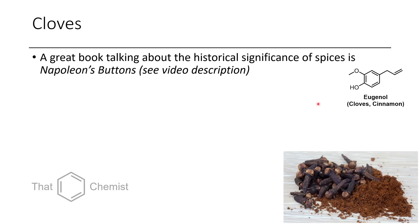So let's start with cloves. Cloves is probably the most typical compound that has an allyl benzene that you'll think of when thinking about this class of compounds. Most people have smelled cloves quite often in undergraduate laboratories — the purification of eugenol is done through a steam distillation. There's a really great book that talks about the historical significance of cloves called Napoleon's Buttons, and if you're interested in reading it, I'll put a link down below.